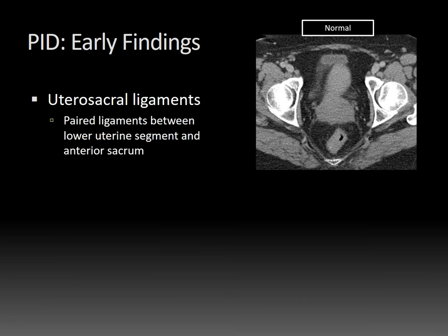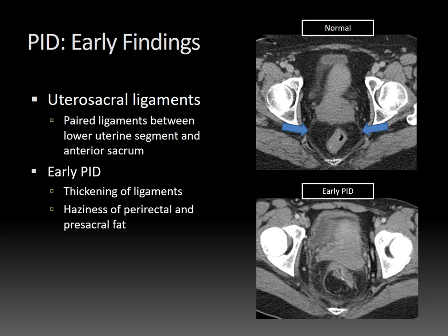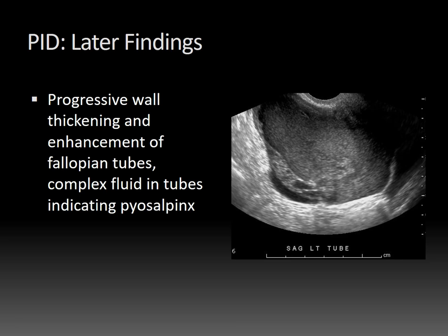Uterosacral ligaments are peritoneal ligaments between the lower uterine segment and the anterior sacrum. Here's an example of normal uterosacral ligaments — thin and curvilinear. In the setting of early PID, you can get thickening of these ligaments and then haziness of the surrounding peri-rectal and pre-sacral fat.